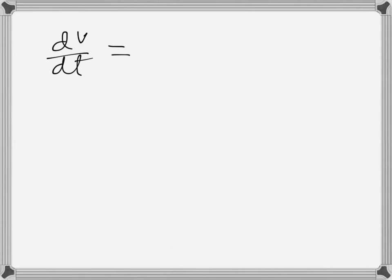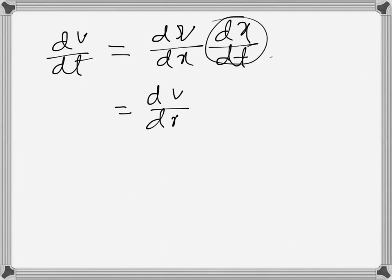We need to bring in x, the position displacement. We can write dv/dt in terms of dx. Since dx/dt is v, that's v there.